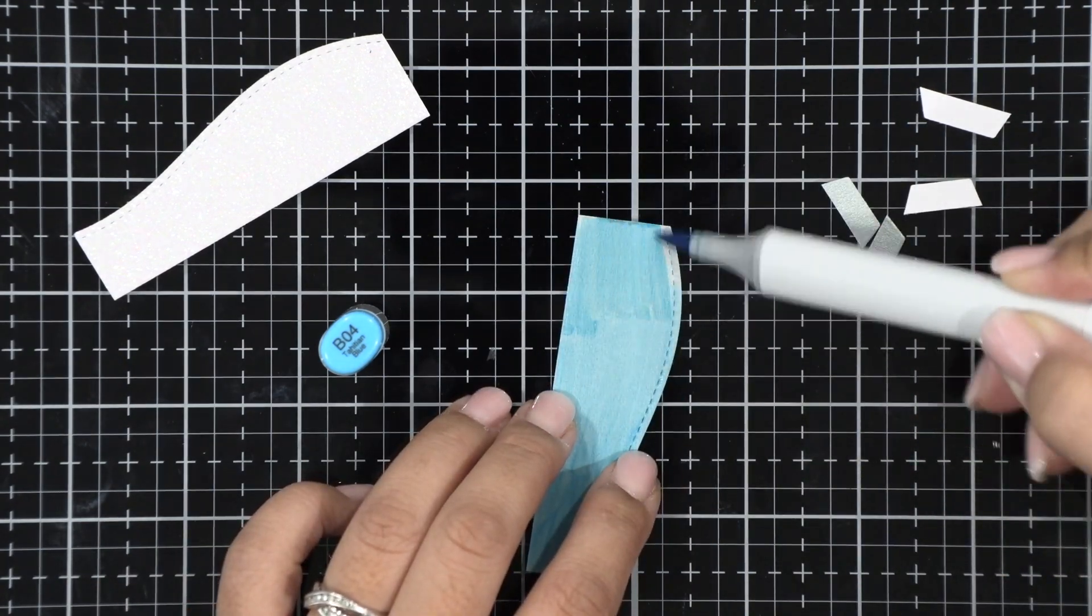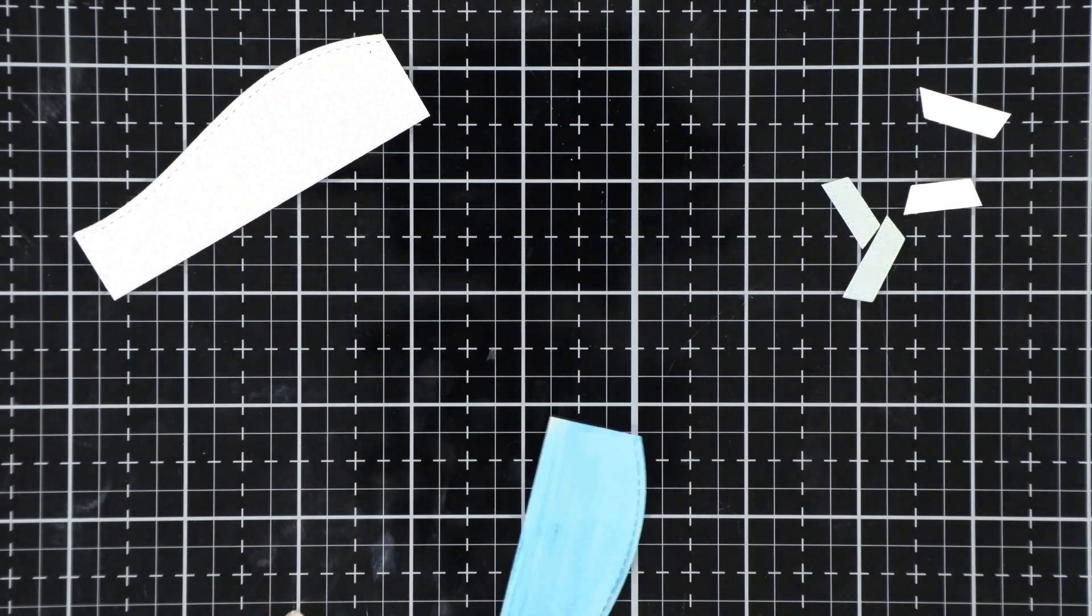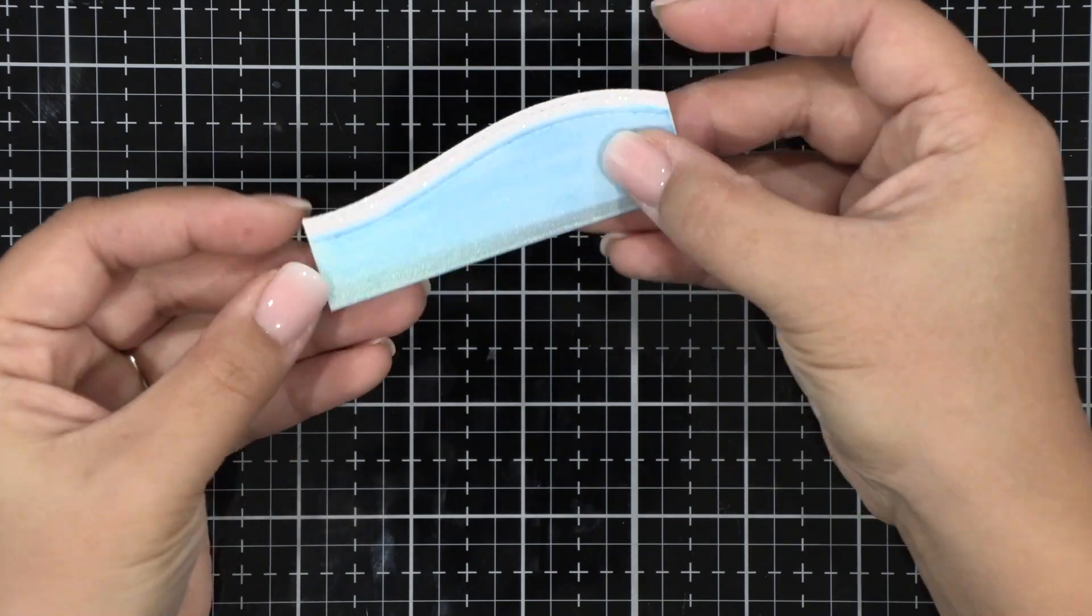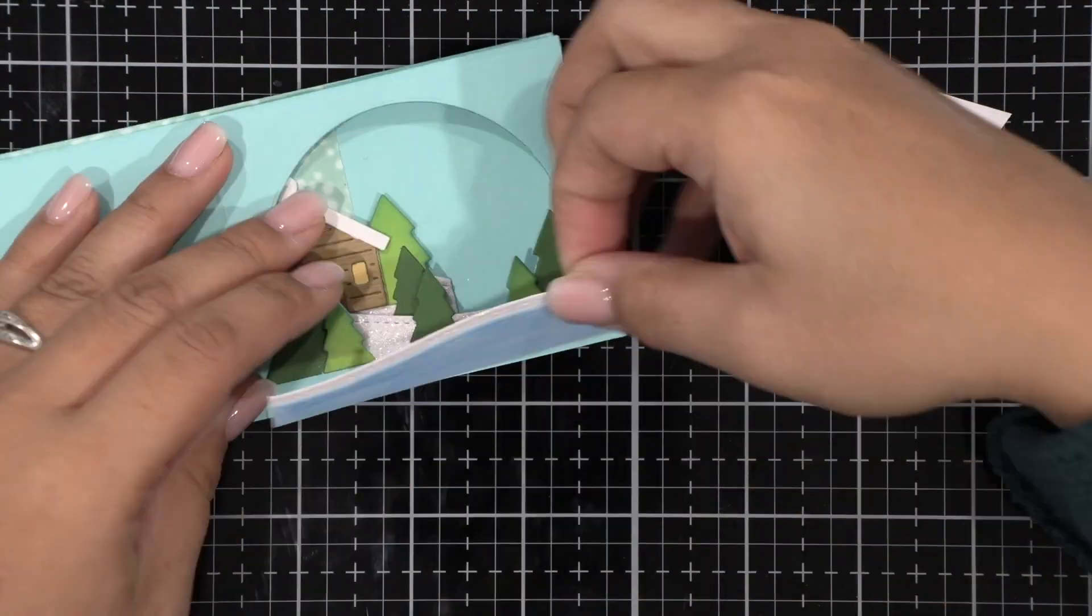When I was done coloring the vellum piece I go ahead and adhered the two pieces together trimmed it off a little bit at the bottom and then adhered it to the front of my card.